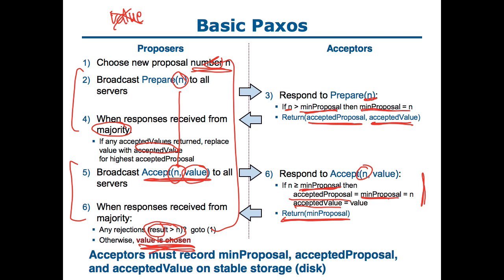In order for this protocol to work, the acceptor has to guarantee the stability of three values: minProposal, acceptedProposal, and acceptedValue. So they have to be stored on disk, flash memory, or some other kind of device that can survive crashes and restarts of the acceptor's machine.